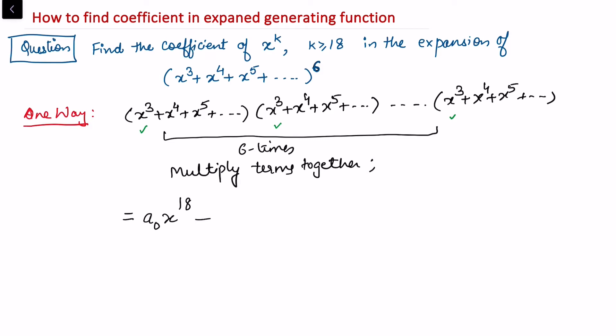Then we multiply other terms — x³ multiplied by x⁴ gives x to the power 19, and we write this as a₁. We continue this expansion. Our question is to find the coefficient in general, specifically the coefficient of xᵏ for k ≥ 18 in this expansion.